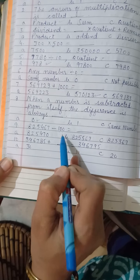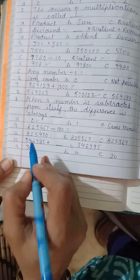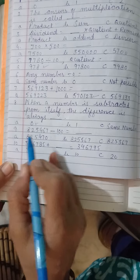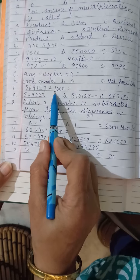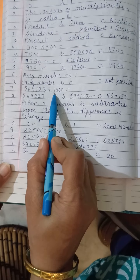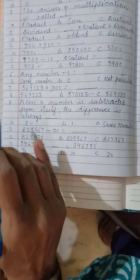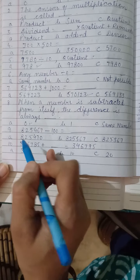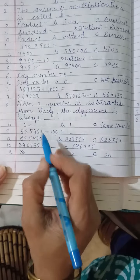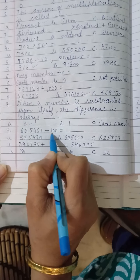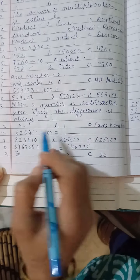This one. Subtract 100. Subtract 100 means 100 place digit will be decreased by 1. As we have seen in the sum. Plus means that digit is increased by 1. And minus means that digit is decreased by 1. 100 means 100 place digit will be decreased by 1.